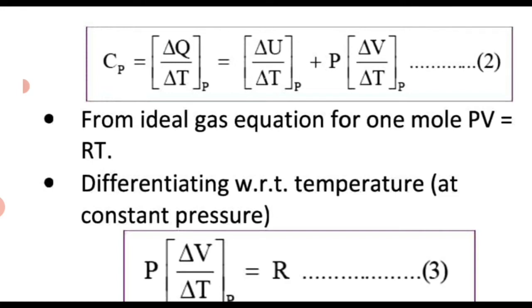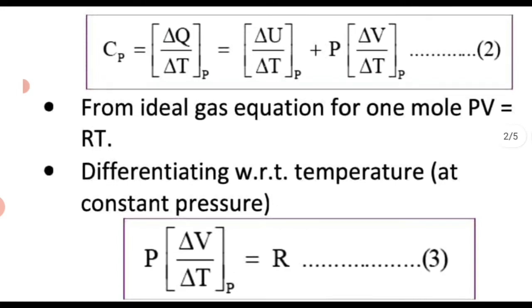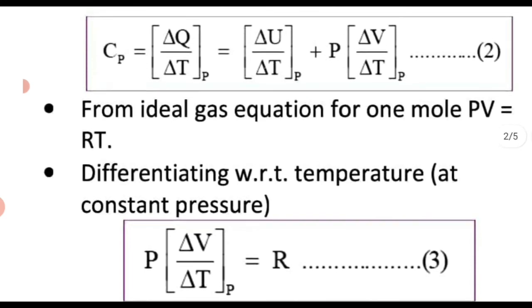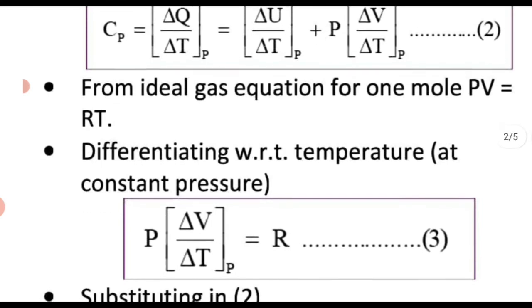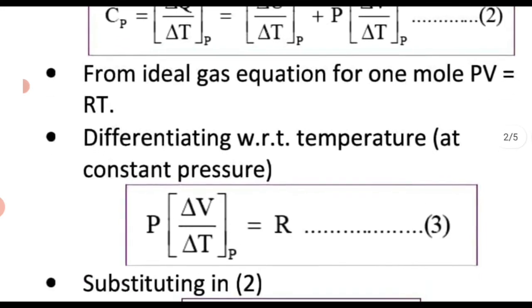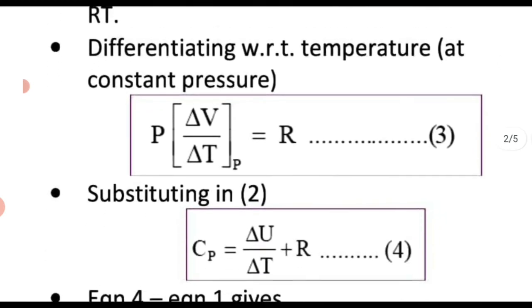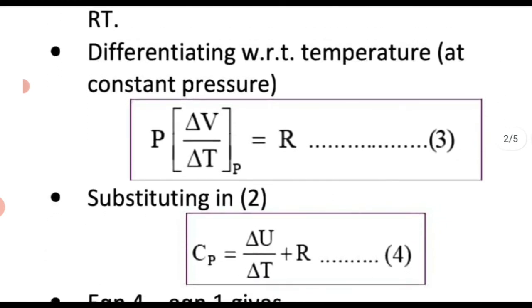For an ideal gas, for one mole: PV = RT. So P·ΔV = R·ΔT. Therefore P·ΔV / ΔT = R·ΔT / ΔT = R. So we have P·ΔV / ΔT = R, and Cp = ΔU/ΔT + R.